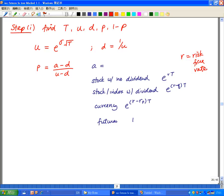If the underlying asset is a stock index or a stock with dividend, we'll put in e to the power r minus q times t. q is our dividend yield.